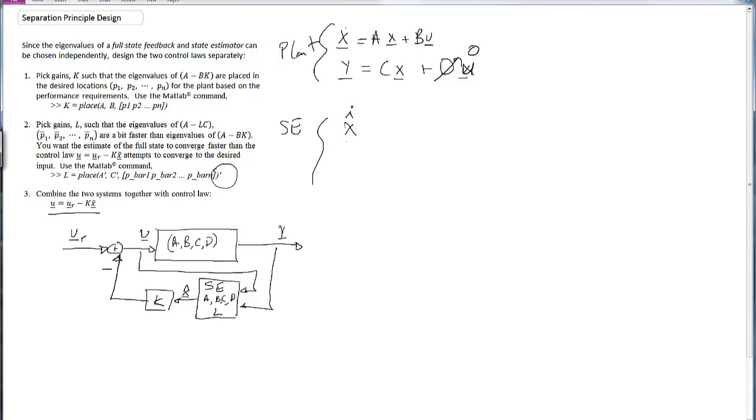The state estimator has dynamics X hat dot equals AX hat plus BU plus L times Y minus Y hat, and Y hat equals CX hat plus DU. In our analysis we set D to zero. We can always have a D term if desired, but you've got to carry that D term around.